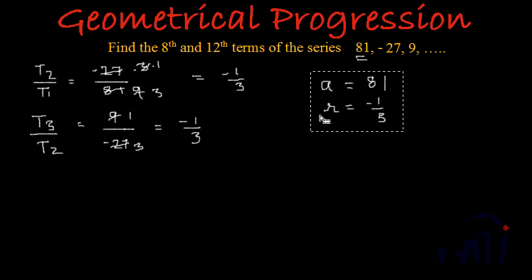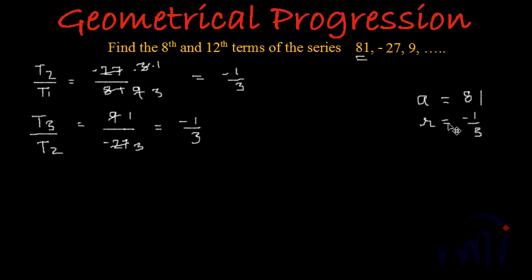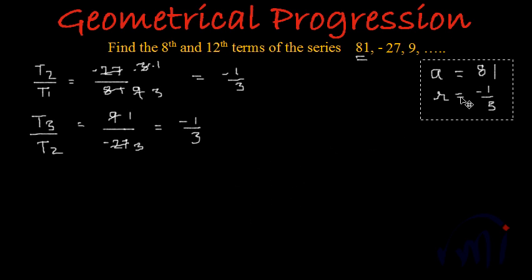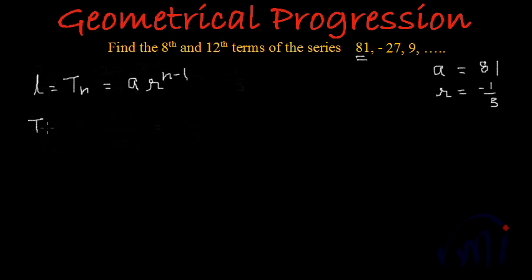Let me place these parameters in a safe place. The formula for the nth term — last term or Tn — is actually written as A multiplied by R to the power n minus 1. So if we have to find the 8th term, it will be A multiplied by R to the power n minus 1, that is 7.